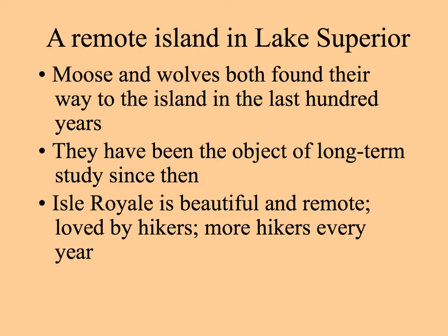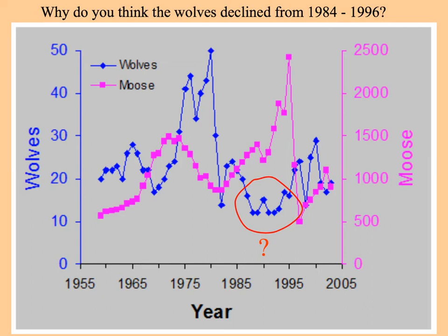Isle Royale is really beautiful and remote — it's hard to get there. Hikers love to go there, but you have to pack in special equipment to filter the water, and there are no vehicles. There are more hikers coming every year. Data from 1955 to 2005 show wolf numbers on the left axis and moose numbers on the right axis, showing the same kind of pattern as with the lynx and hare: an increase in prey is followed by an increase in predators, which causes a decrease in prey, then a decrease in predators, which allows the prey to build up again.